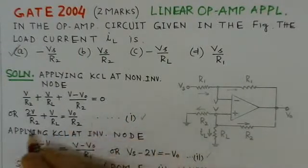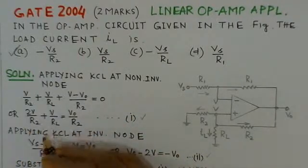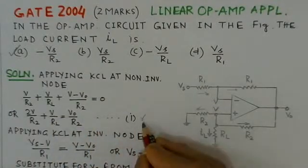Now if you simplify this we get 2V upon R2 plus V upon RL plus V upon R2. This is the value here, this is equation 1.